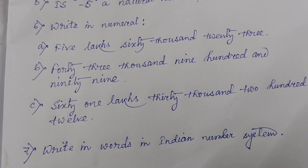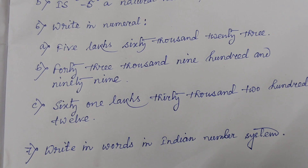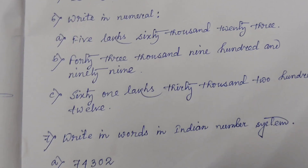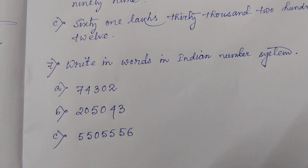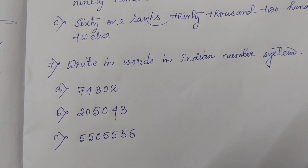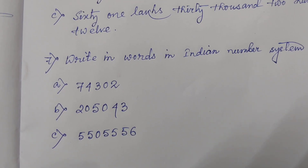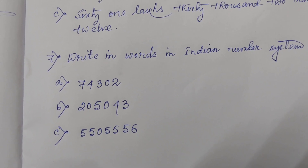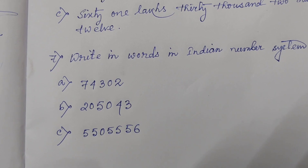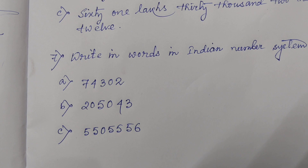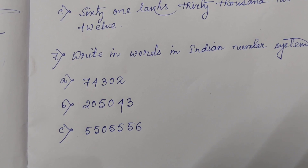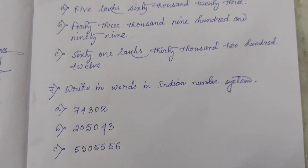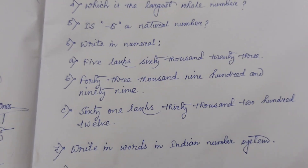Question 6(c): Sixty-one lakhs thirty thousand two hundred twelve. Question 7: Write in words in the Indian number system — (a) 74302; (b) 205043; (c) 55055556. Everyone must do all the homework in your classwork copy.